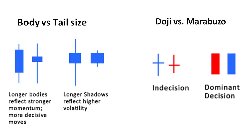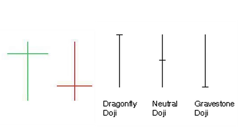Smaller candles can indicate the market's indecision, disinterest, or a balance between bullish and bearish forces. Similarly, a candle that is almost all wick implies that, regardless of the range of prices occurring in the time period, the open and close were extremely close. These candles are referred to by the Japanese term doji.